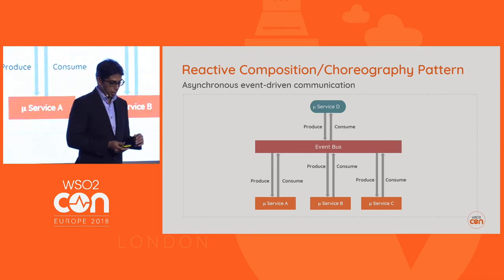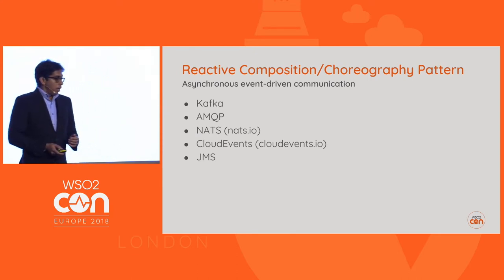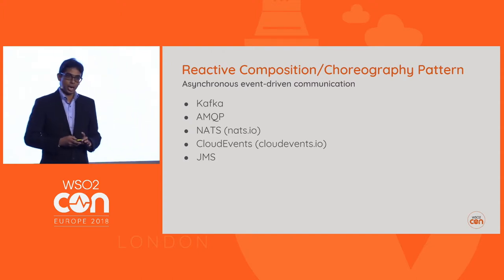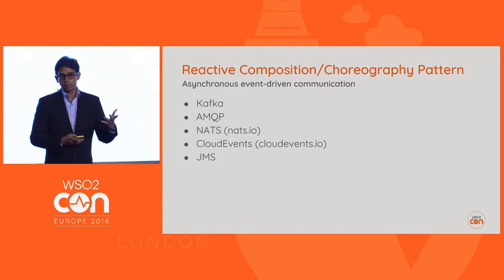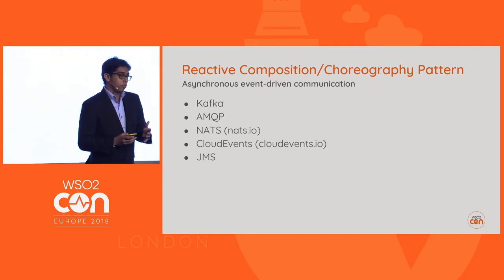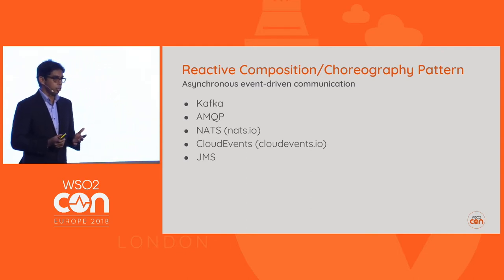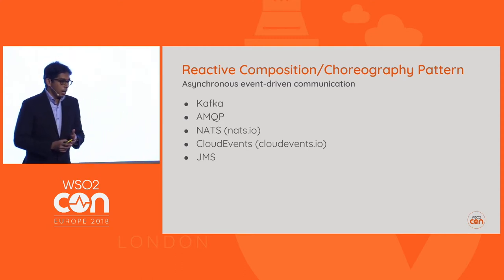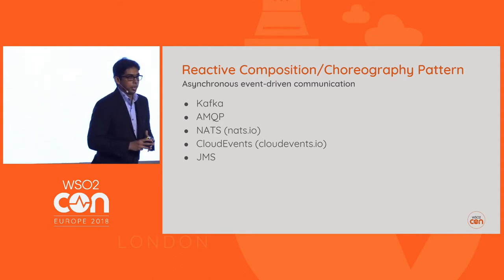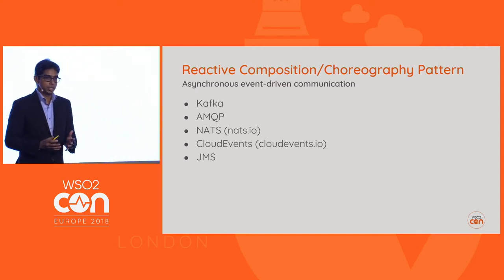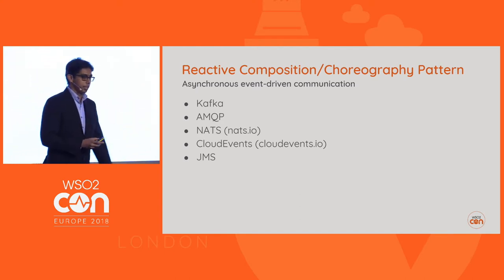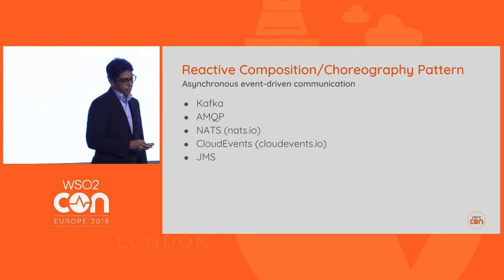Kafka is becoming very popular for this pattern. AMQP is a good candidate for guaranteed delivery scenarios. There are also cloud-based eventing solutions — NATS is becoming really popular as a CNCF technology. CloudEvents provides a specification to define your events and is gaining a lot of traction. JMS is a possible technology but not getting as popular.